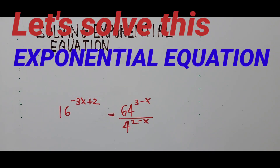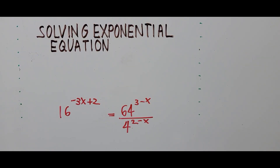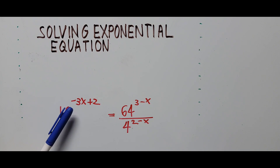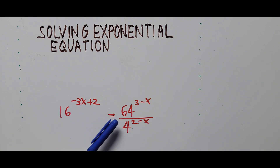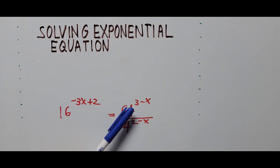Hello everybody, this is Cassiano, Easy Math. Today's video is about solving the exponential equation: 16 raised to the negative 3x plus 2, equals 64 raised to 3 minus x, divided by 4 raised to 2 minus x.